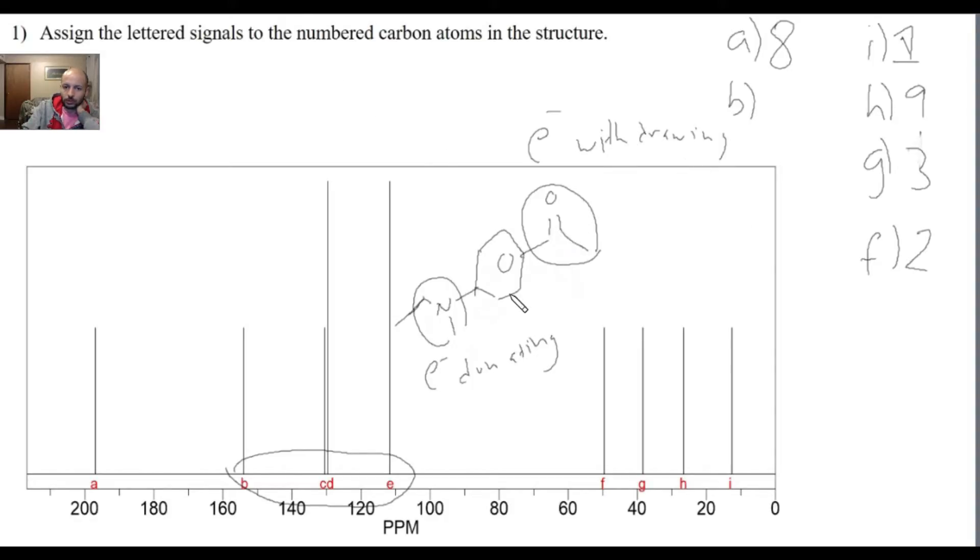So, we have this electron withdrawing group and this electron donating group, and from the benzene chapter, what we will remember, I'll use a different color here, I'll use blue. From the benzene chapter, remember that the electron donating group puts a slightly positive charge on the ortho and the para positions.